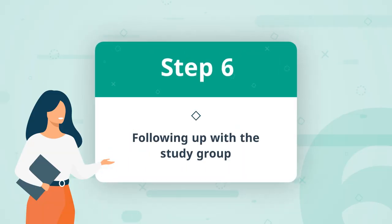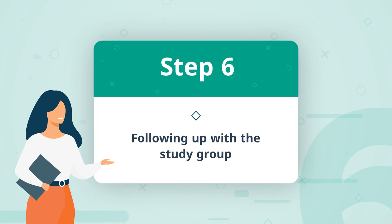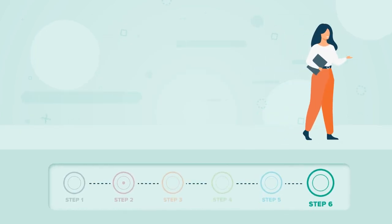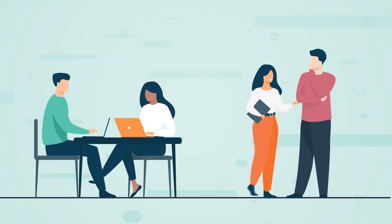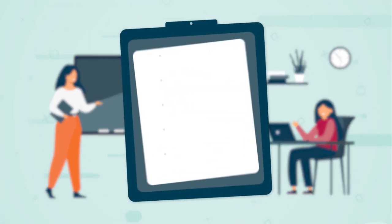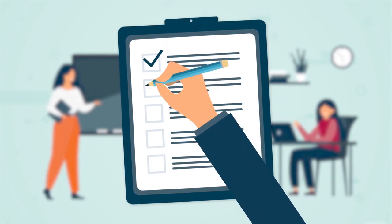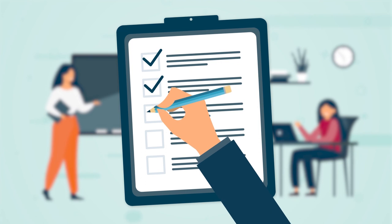Step 6: Following up with the study group. Once the course has come to an end, it is really important to focus on putting what was learned into practice in the classroom. For example, study group members could invite each other to open their lessons where they try out what was learned during the course. When the course is finished, it is useful to ask teachers to fill in a feedback form, to understand what worked and what did not work with the study group, so that it can be improved next time.